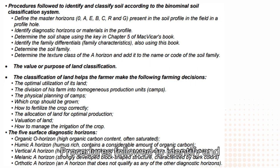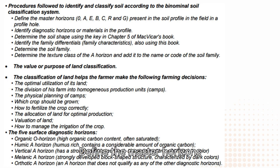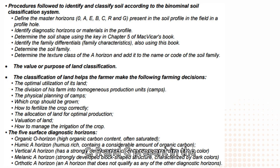Procedures followed to identify and classify soil according to the binomial soil classification system: First, define the master horizons O, A, E, B, C, R, and G present in the soil profile in the field in a profile hole.